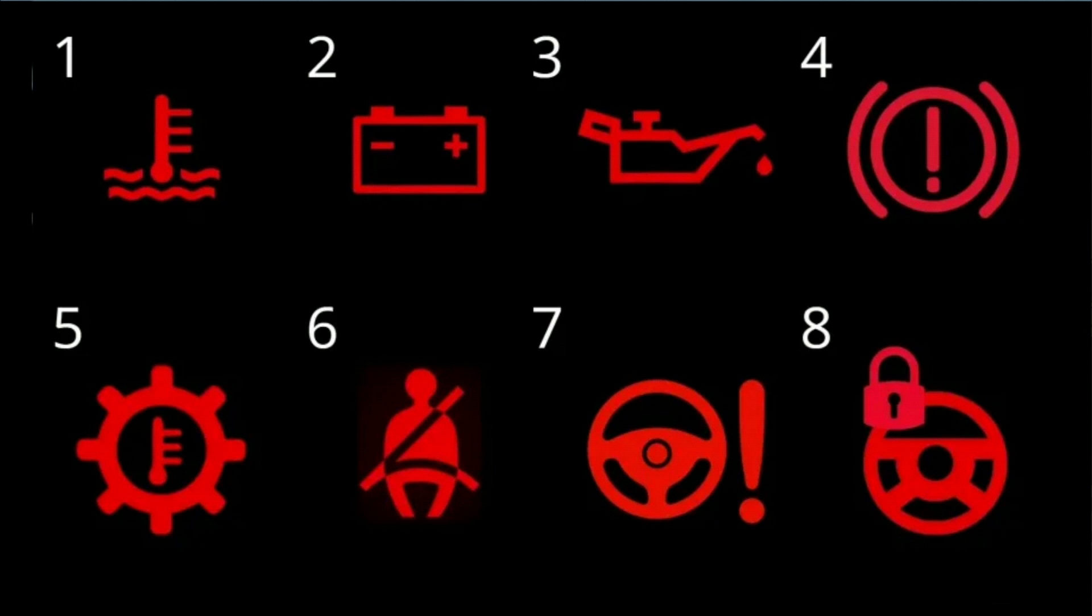Number 7: Power Steering Warning. Not surprising anyone, a steering wheel with an exclamation mark next to it indicates a power steering system issue.